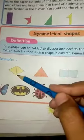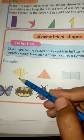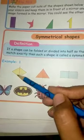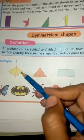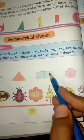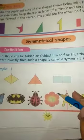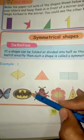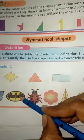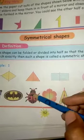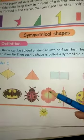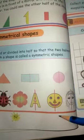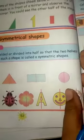This is a diamond shape with a symmetric line. Triangle, rectangle, and circle are also symmetric shapes — both halves are equal. Butterfly, flower, smiley face, and a girl are also symmetrical shapes.